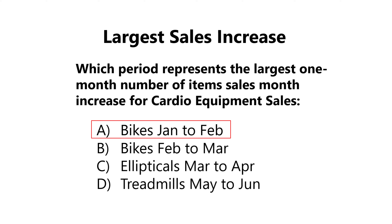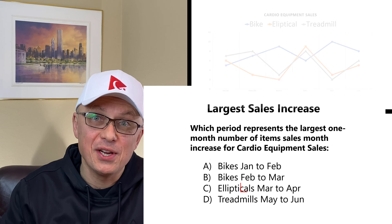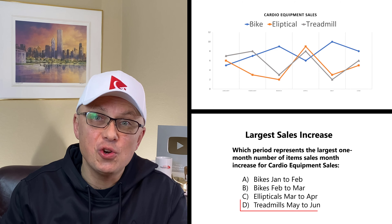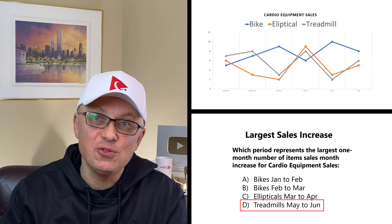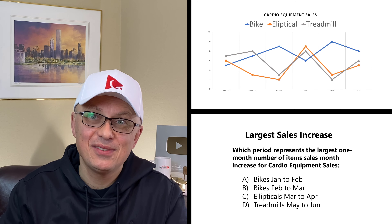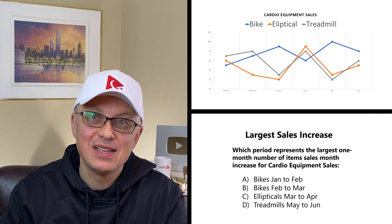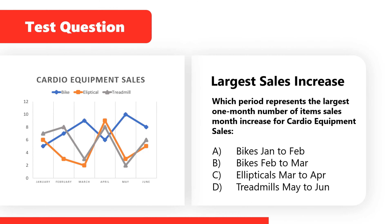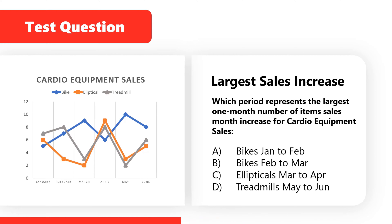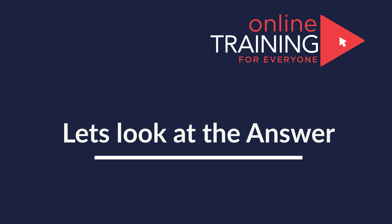You have four different choices. Choice A: bikes from January to February. Choice B: bikes from February to March. Choice C: ellipticals from March to April. And choice D: treadmill from May to June. Do you see the answer? You may need to look closely to determine the correct answer. Give yourself 5 to 10 seconds to see if you can come up with the right solution. Are you ready? We're going to move forward and cover the answer together.